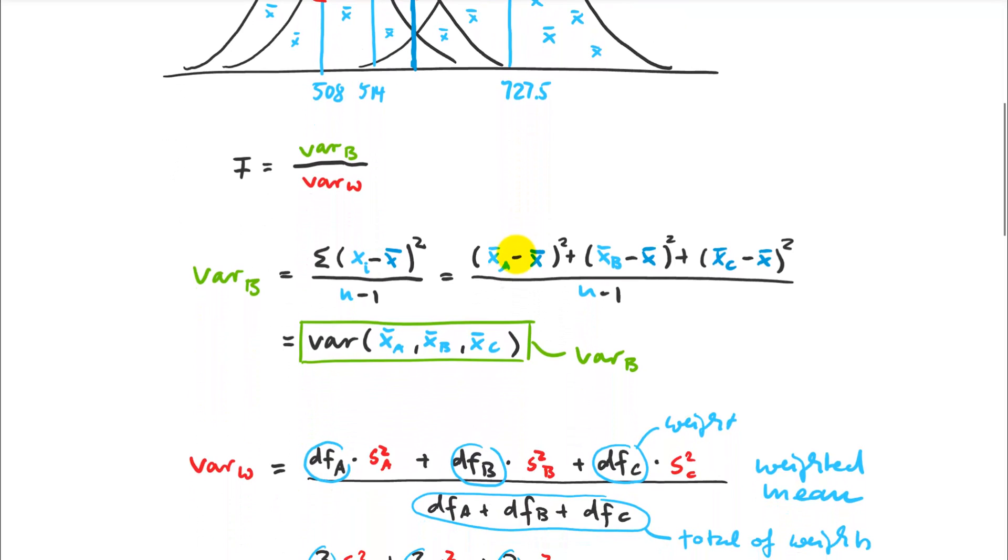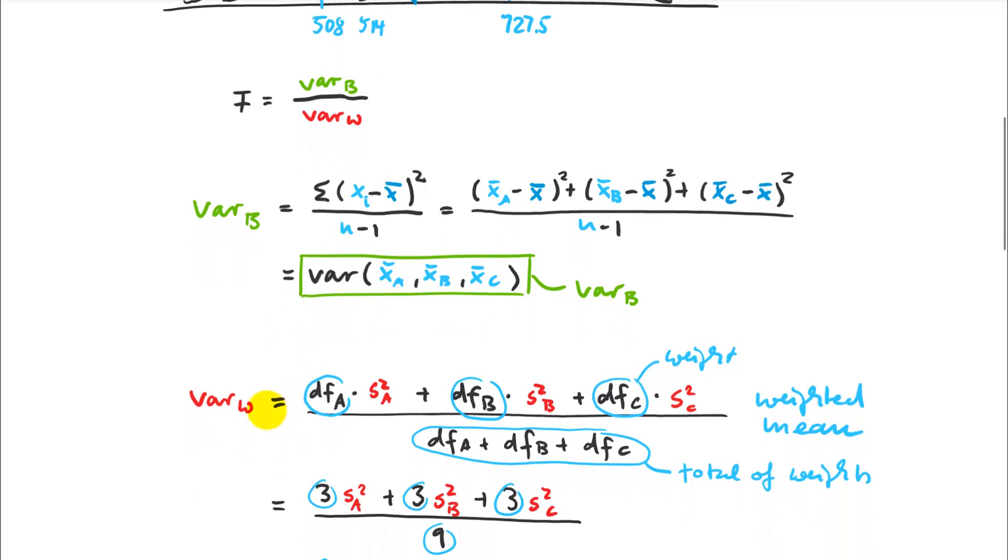The variance within is also quite straightforward. In this case, it's a weighted average. We want to weight this by our degrees of freedom, by our sample size. So I have my variance for variety A, variance for variety B, variance for variety C. I just multiply them by the degrees of freedom, so n minus one for each of those samples, and then I divide by all of them.